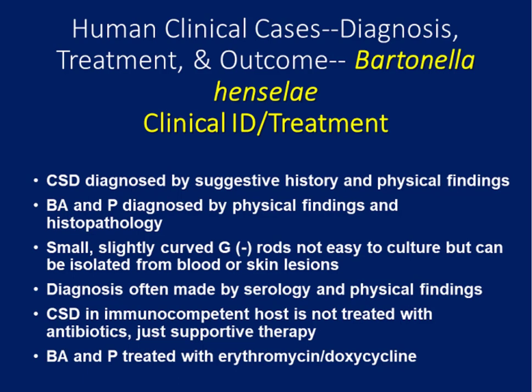Cat scratch disease is diagnosed by a suggestive history and physical findings. Bacillary angiomatosis and peliosis are diagnosed by physical findings and histopathology. Small, slightly curved, gram-negative rods are not easy to culture, but they can be isolated from blood or skin lesions. Diagnosis is often made by serology and physical findings. For the most part, cat scratch disease in immunocompetent hosts is not treated with antibiotics, rather just supportive therapy.